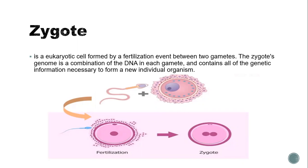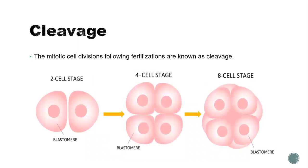The development of the zygote begins with a series of rapid mitotic divisions known as cleavage. It converts a single-cell zygote into a multicellular embryo. The mitotic cell divisions following fertilization are known as cleavage, and the pattern of cleavage differs greatly among animals.